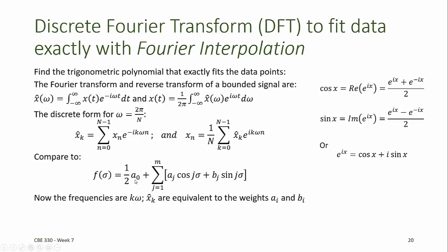If we compare this to our trigonometric polynomial, the frequencies sigma j are now k omega. The x hat sub k values are equivalent to the weights a i and b i that are assigned to the sine and cosine functions for each frequency.